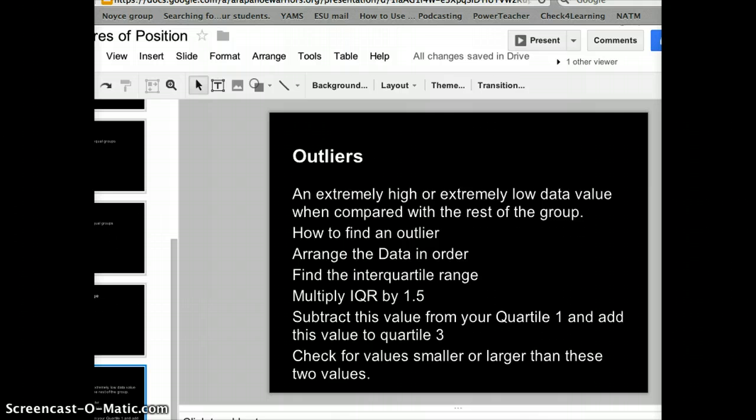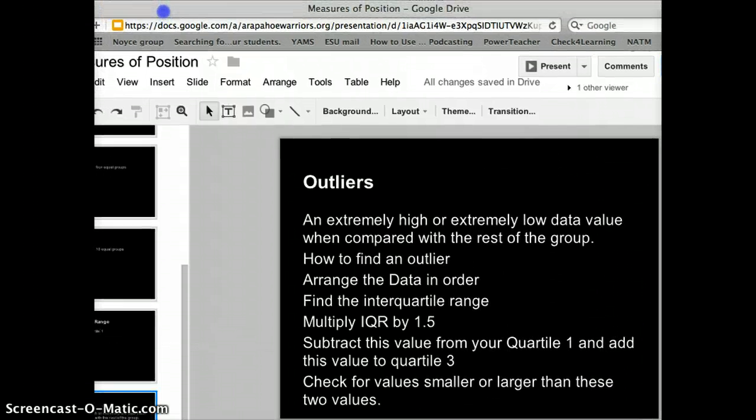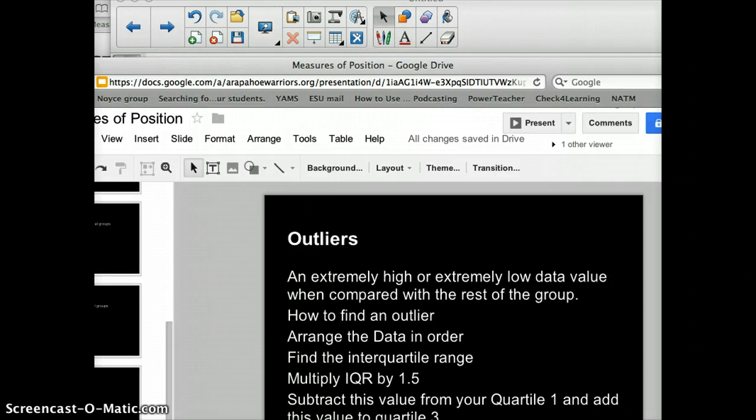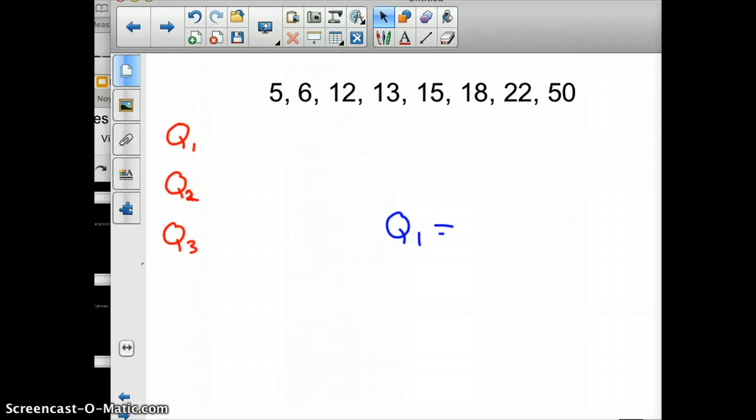Outliers are extremely high or extremely low data values when compared to everything else. A lot of times this is how they find people who cheat on tests. Suddenly we have the person that gets a 98 while the rest of the class got a 60 on the same test, so outliers can be very important.